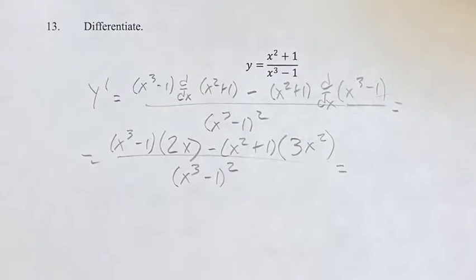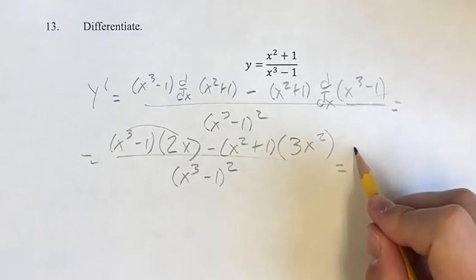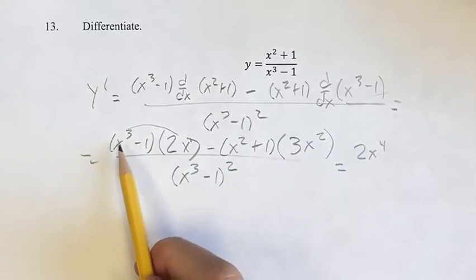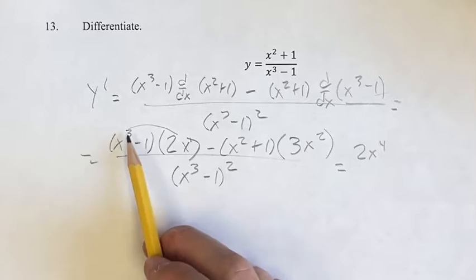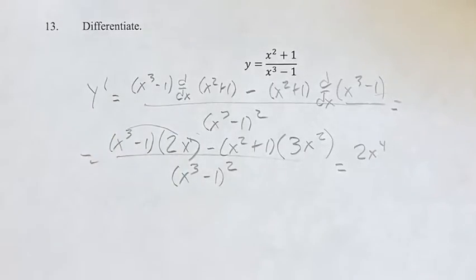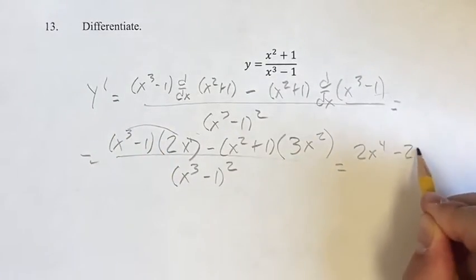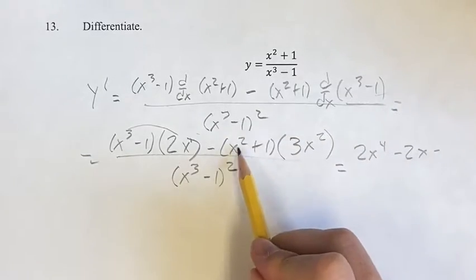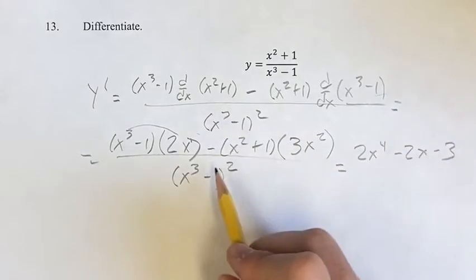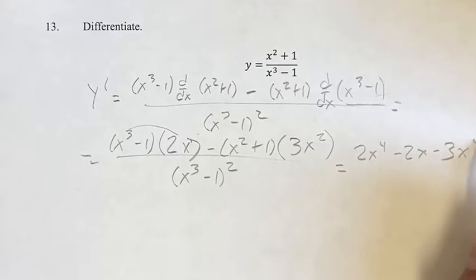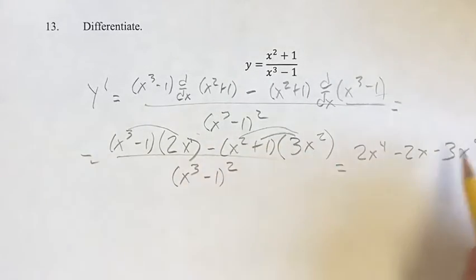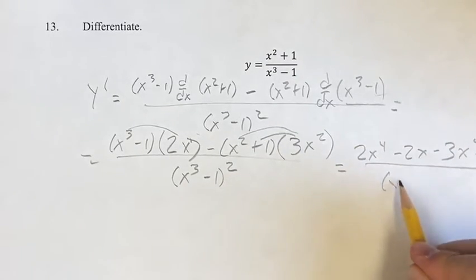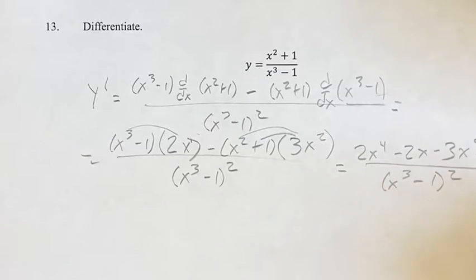And this is going to be equal to 2x to the fourth. Again, multiplying terms that have the same base add their exponents. So 3 plus 1 is 4, and then minus 2x minus x squared times 3x squared is 3x to the 2 plus 2 is x to the fourth. Minus 1 times 3 is minus 3x squared. And this is all over the same, x cubed minus 1 squared.